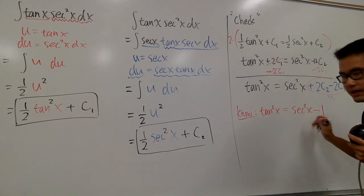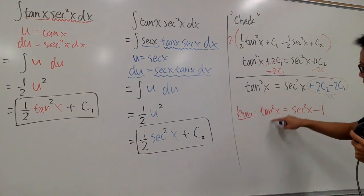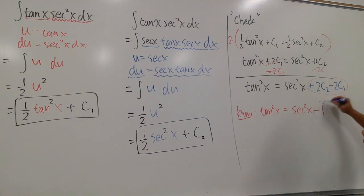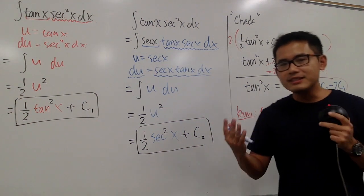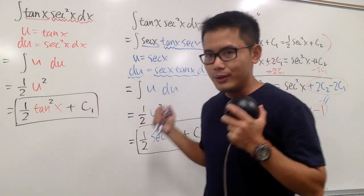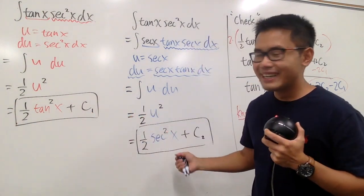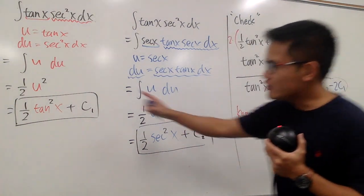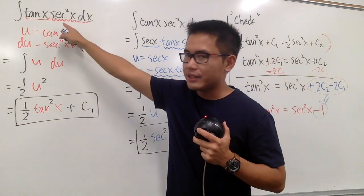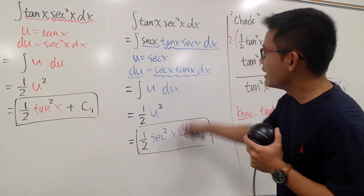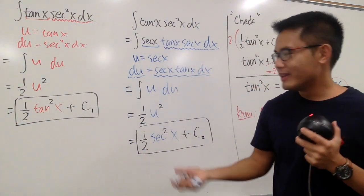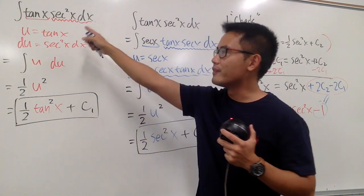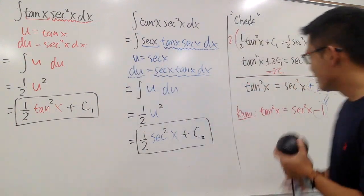Well, now, this matches, this matches, so what is this? This and that has to be the same. So, in other words, 2c2 minus 2c1 is nothing but just negative 1. So this is the idea. We may get different looking results, but they are just off by a constant. If you differentiate this, you will get that for the answer, for the original. If you differentiate that, you also get that for the derivative. So they are both the anti-derivative of the integrand. Anyway, that's it.